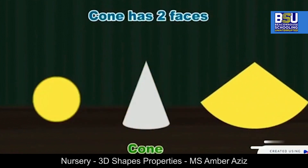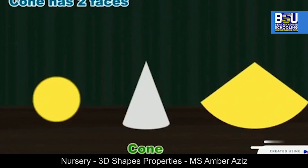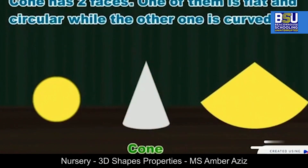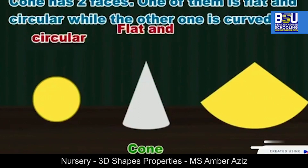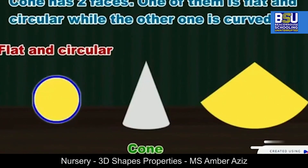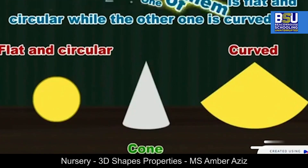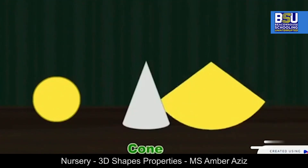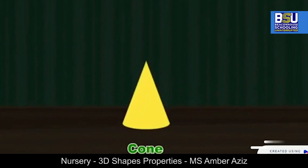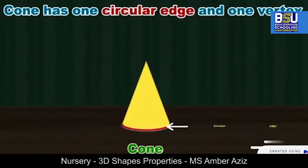Now look at the cone. It has two faces — one is flat and the other is curved. The cone has one edge and one vertex.